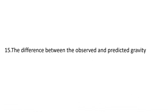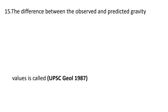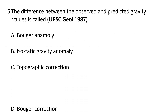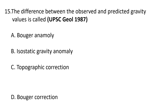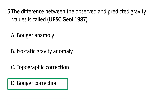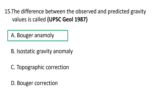Fifteenth question: the difference between the observed and the predicted gravity values is called — a) Bouguer anomaly, b) isostatic gravity anomaly, c) topographic correction, and d) Bouguer correction. The correct answer is a) Bouguer anomaly — it is the difference between the observed and the predicted gravity.